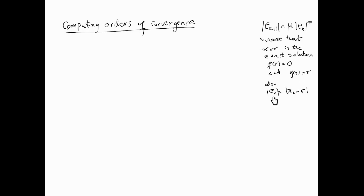Furthermore, by definition, e_k, the error at the kth step, or kth iteration, is x_k minus r.